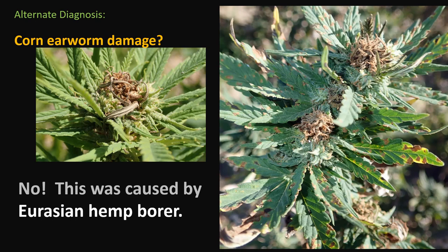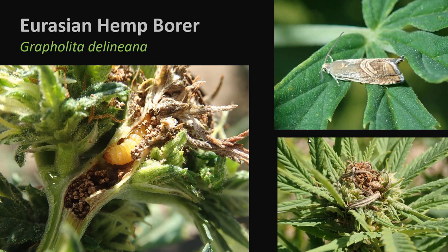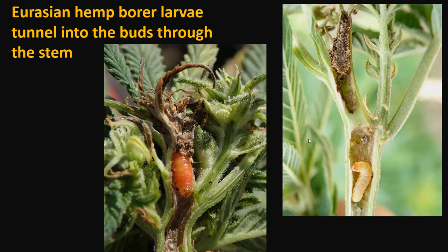There is one other insect worth pointing out as an alternate diagnosis that damages buds. Photos of hemp may show dead buds that sort of look like corn earworm damage, but there is a second caterpillar capable of killing buds on hemp called the Eurasian hemp borer. The Eurasian hemp borer is a tiny moth with a tiny caterpillar that develops within the plant — it is not feeding on the bud from the outside but from within. They are stalk tunnelers during early generations, and when buds appear they are in the upper part, reaming the area underneath the bud so it is killed from below, not from the exterior.